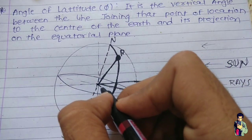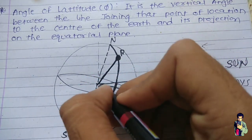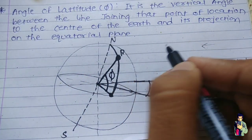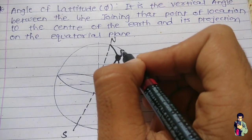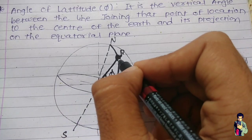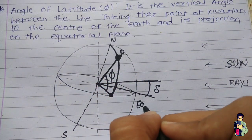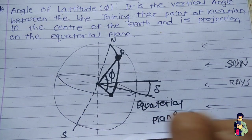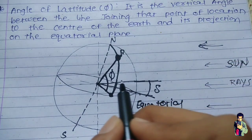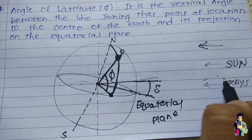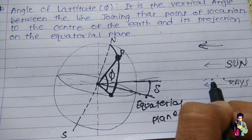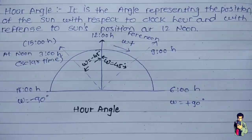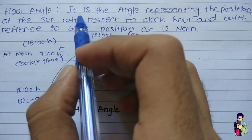This angle is denoted by phi and is known as the angle of latitude — the angle between the line joining the point of location to the center of the earth and its projection on the equatorial plane. The deflection from the center of the sun to the equatorial plane is the declination angle, and this angle phi is the angle of latitude.